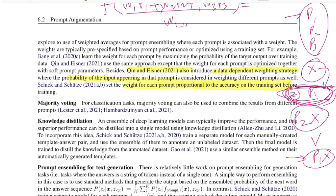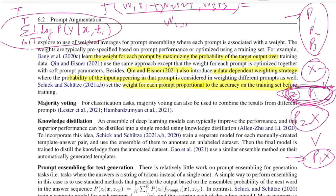There are also works that learn weights for each prompt by maximizing the probability of the target output over training data. The base equation averages log probability of answer y given input x and prompt t_i across t prompts. To add learnable weights, you introduce an extra parameter theta subscripted by i — one theta per prompt — and optimize to maximize the y value weighted by these learned parameters.